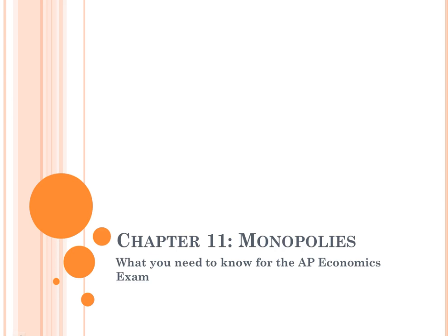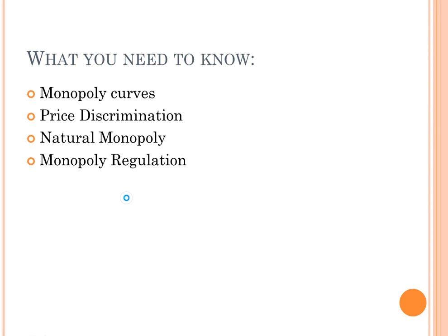Hi, my name is Dylan, and welcome to Chapter 11 of the Barron's AP Economics book. I'll be covering Chapter 11 in this video and what you need to know for the AP exam. Here's what you need to know in this chapter: what monopoly curves look like, what price discrimination is, what natural monopolies are, and how the government can choose to regulate monopolies.